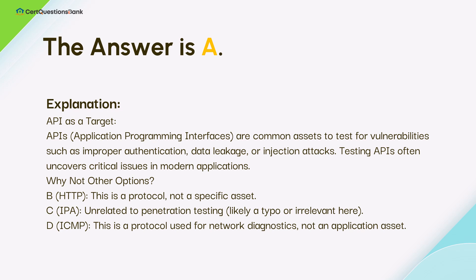Why not other options? B. HTTP is a protocol, not a specific asset. C. IPA is unrelated to penetration testing. D. ICMP is a protocol used for network diagnostics, not an application asset.